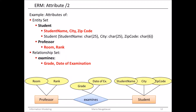We add the proper attributes to the relationship set. The grade is fixed to this 'examines' relationship set, as well as the date of the examination. The date of examination is not an attribute for the professor, since the professor has many examination dates, and it doesn't describe the person of the professor in detail. Similarly, adding the date of examination to the student would not make sense, because the student also has many examination dates.